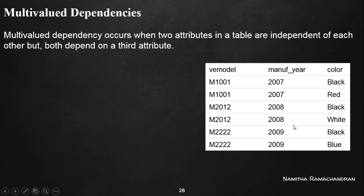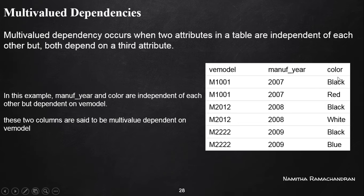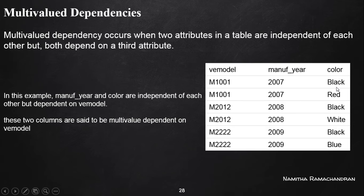From this information, it is clear that manufacturing year and the color attribute are independent of each other, but both are dependent on the vehicle model number. Why? Because if a particular color is specified, we can't uniquely identify whether it was released in 2007, 2008, or 2009. For example, if the color is black, we can't specify which year that model was released, because black models were released in all three years.